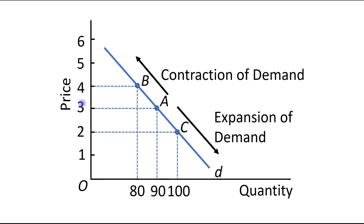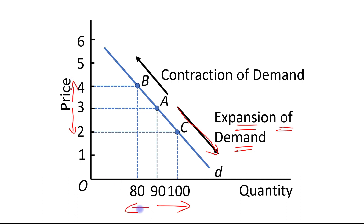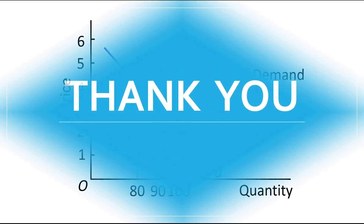To summarize: when price falls from Rs. 3 to Rs. 2, quantity demanded increases from 90 to 100 units — this is known as expansion of demand, and there is a downward movement. When price increases from Rs. 3 to Rs. 4, quantity demanded decreases from 90 to 80 units — this is known as contraction of demand, and there is an upward movement. Thank you.